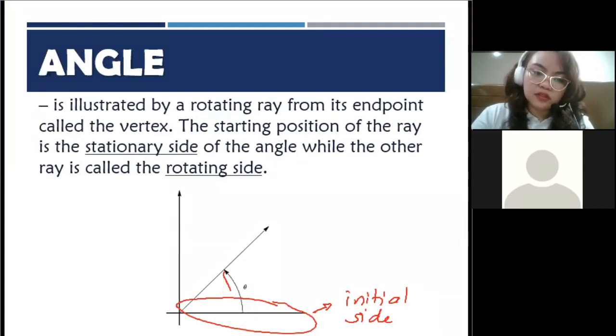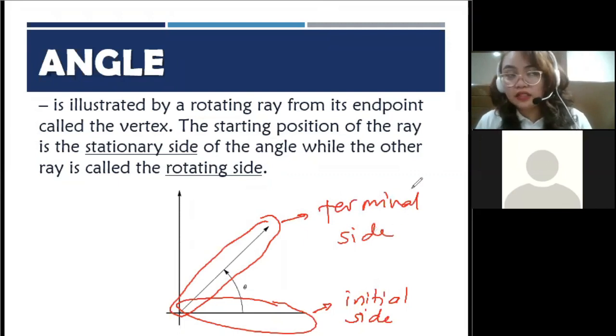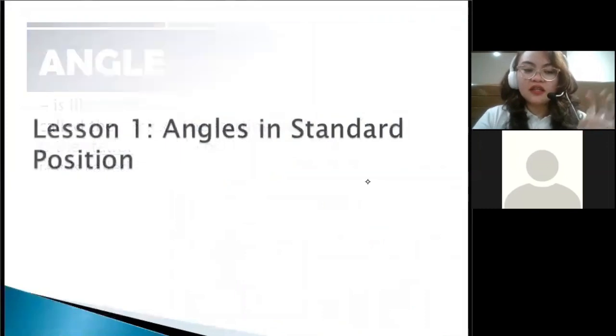And then it moved by a certain degree, measured either by theta or by radian. We'll discuss about that later. So it moves and we now arrive at the rotating side, and this is called the terminal side. So again, when we talk about angles in trigonometry, we are talking about rotation. And then since it is rotating, then it forms a circle. That's why we have the unit circle approach.